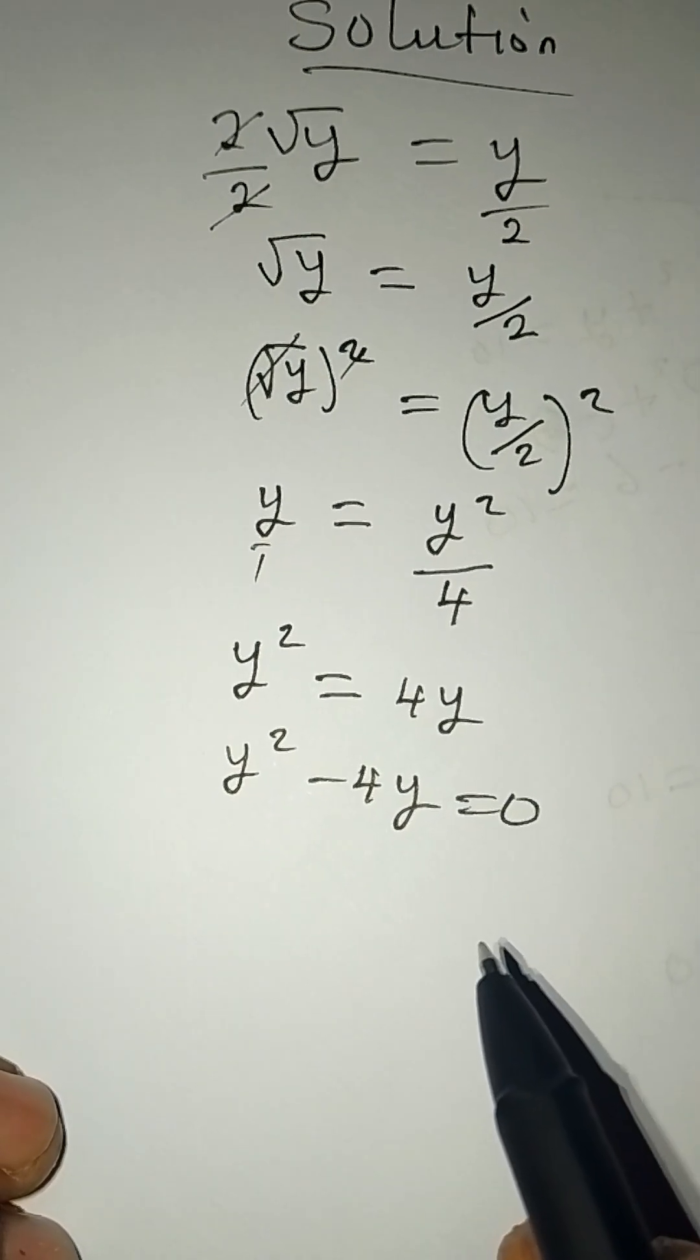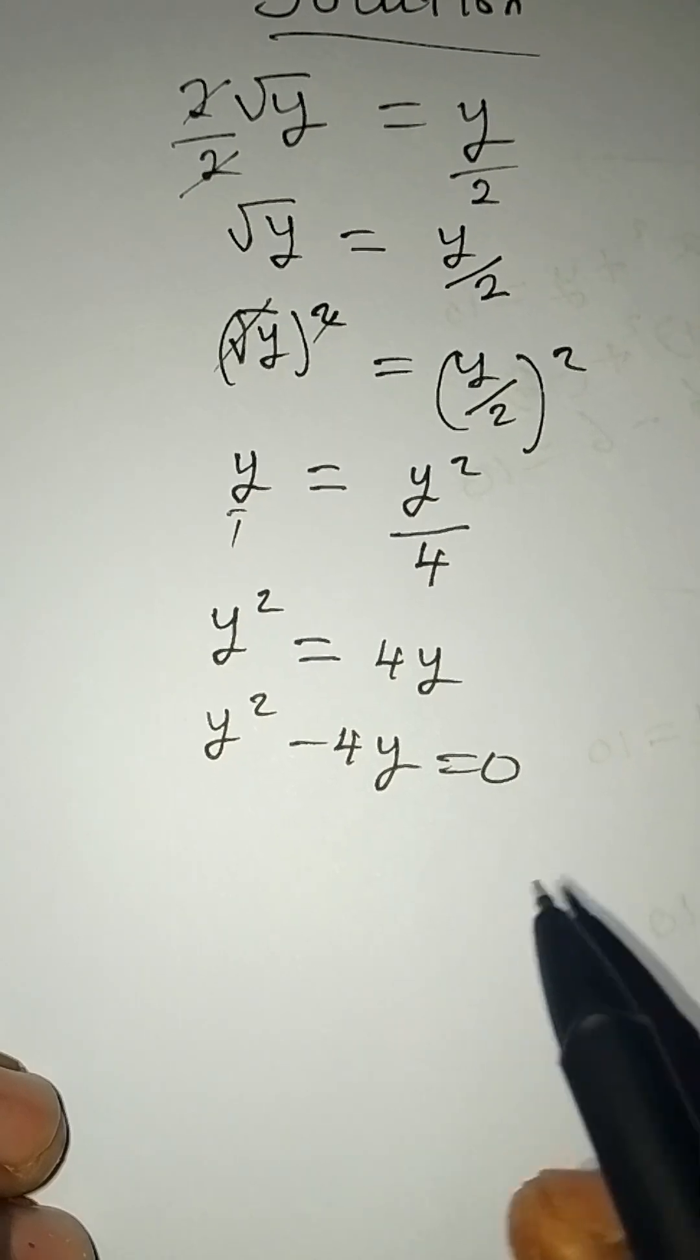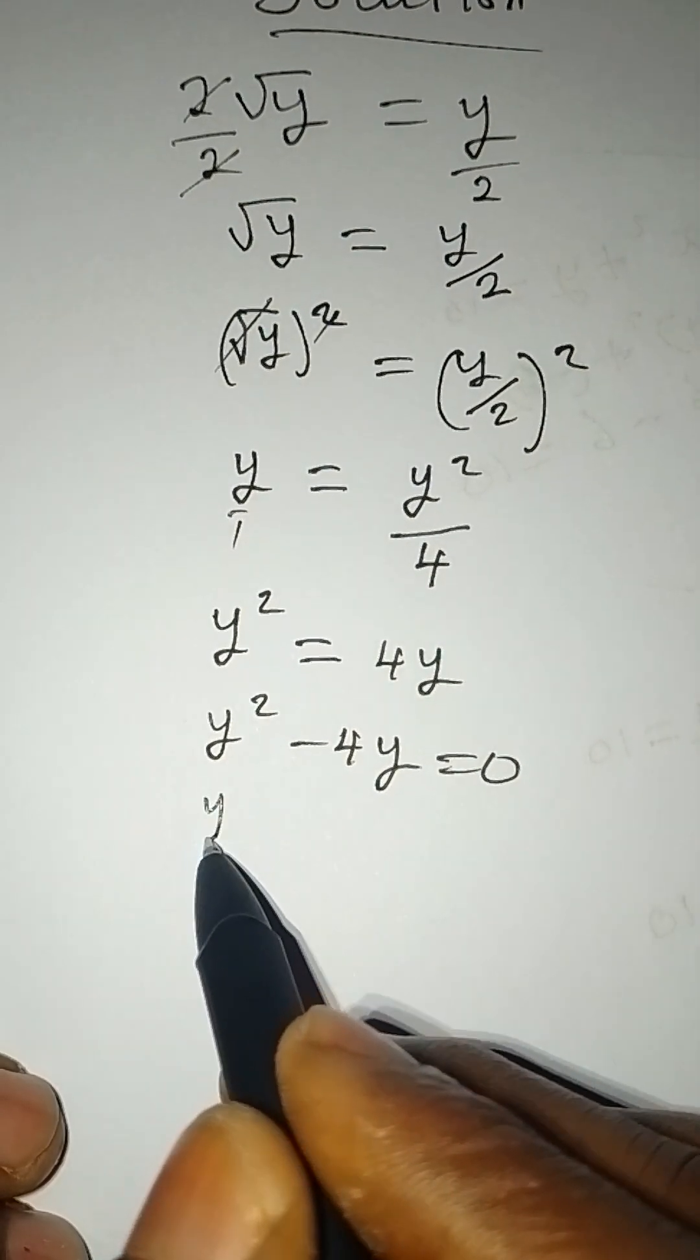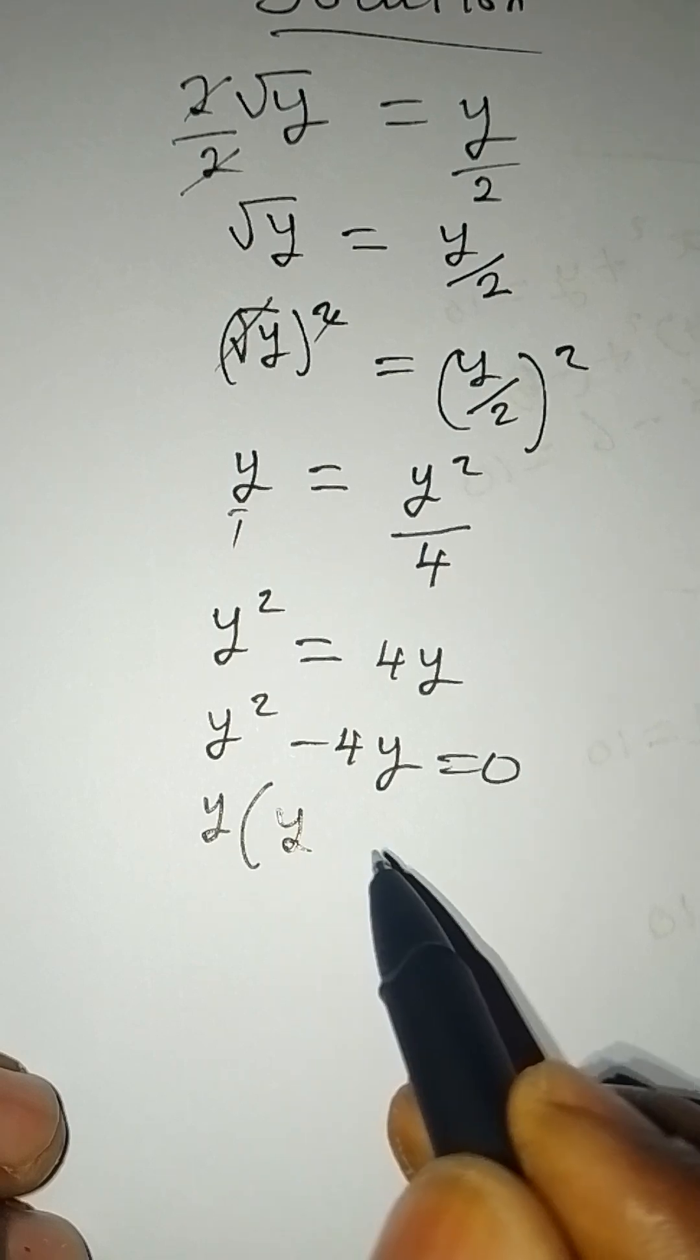This is a quadratic equation. Factoring out the common factor y, we get y(y - 4) = 0.